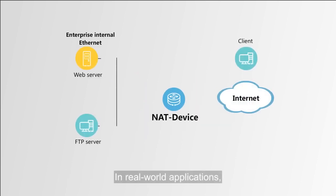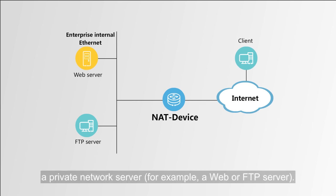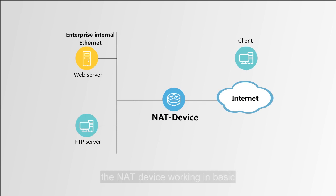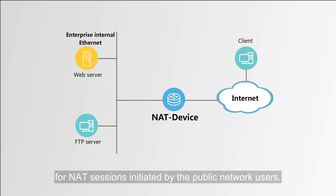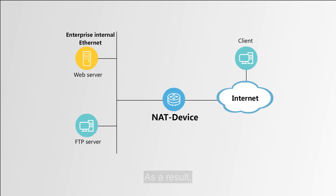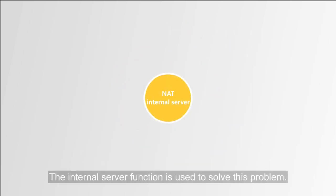In real-world applications, public network users need to access a private network server, for example a web or FTP server. However, the NAT device working in basic or NAPT NAT mode cannot dynamically establish NAT entries for NAT sessions initiated by public network users. As a result, attempts to access the private network server fail. The internal server function is used to solve this problem.